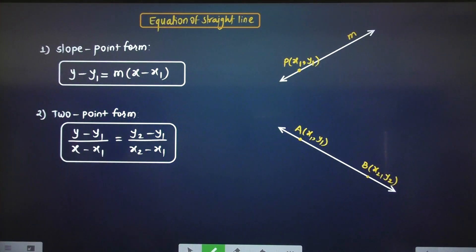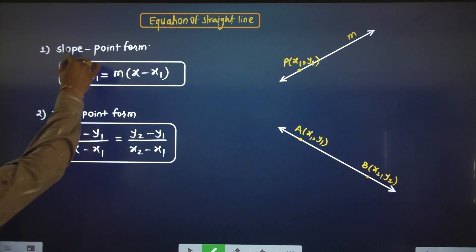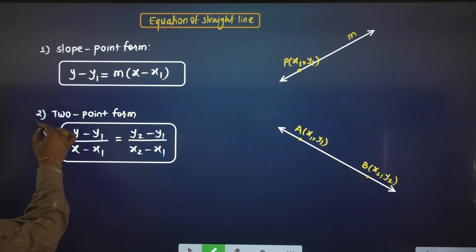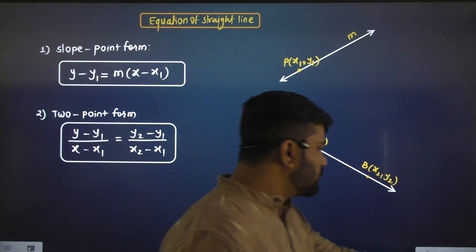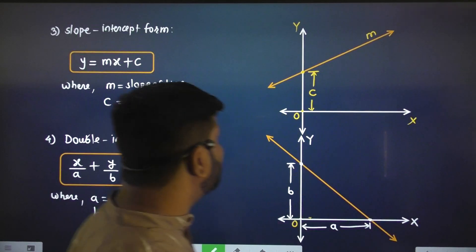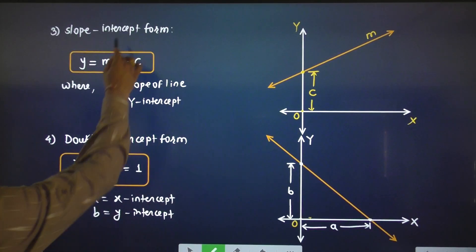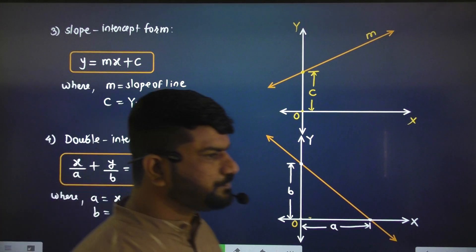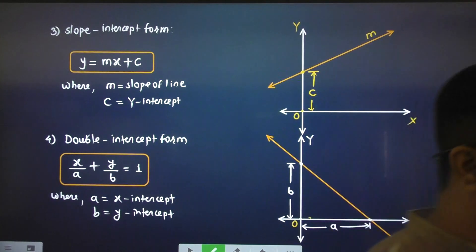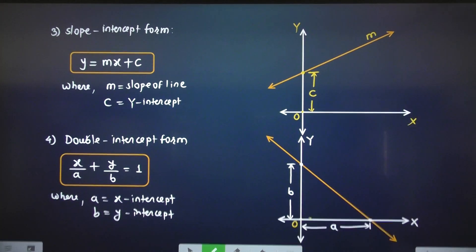So the methods for the equation of a line are: slope-point form, two-point form, slope-intercept form, and double-intercept form. These are the four forms.